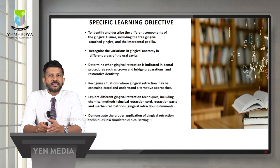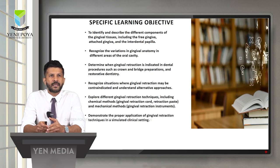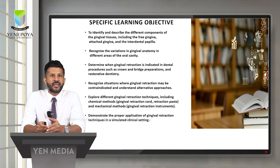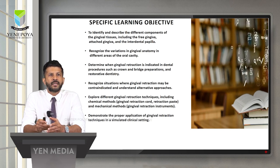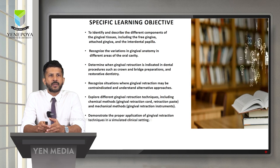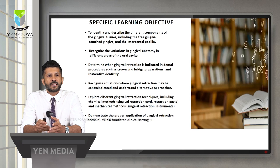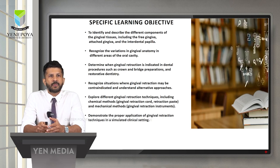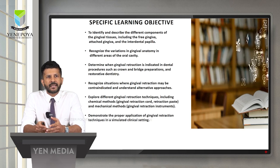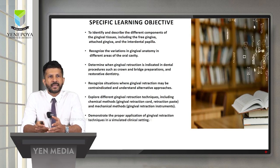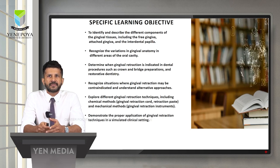To identify and describe the different components of gingival tissues including the free gingiva, attached gingiva, and the interdental papilla. Recognize the variations in gingival anatomy in different areas of the oral cavity. Determine whether gingival retraction is indicated in dental procedures such as crown and width preparations and restorative dentistry. Recognize situations where gingival retraction may be contraindicated and understand alternative approaches. Explore different gingival retraction techniques including chemical and mechanical methods, and demonstrate proper application in a simulated clinical setting.